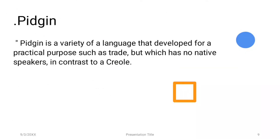Then pidgin. Pidgin is a form of language that is developed when foreign traders make first contact with local inhabitants and try to communicate with each other. Basically, pidgin is formed by two mutually unintelligible speech communities attempting to communicate. Pidgin is a variety of language developed for a practical purpose such as trade, but which has no native speaker, in contrast to creole.